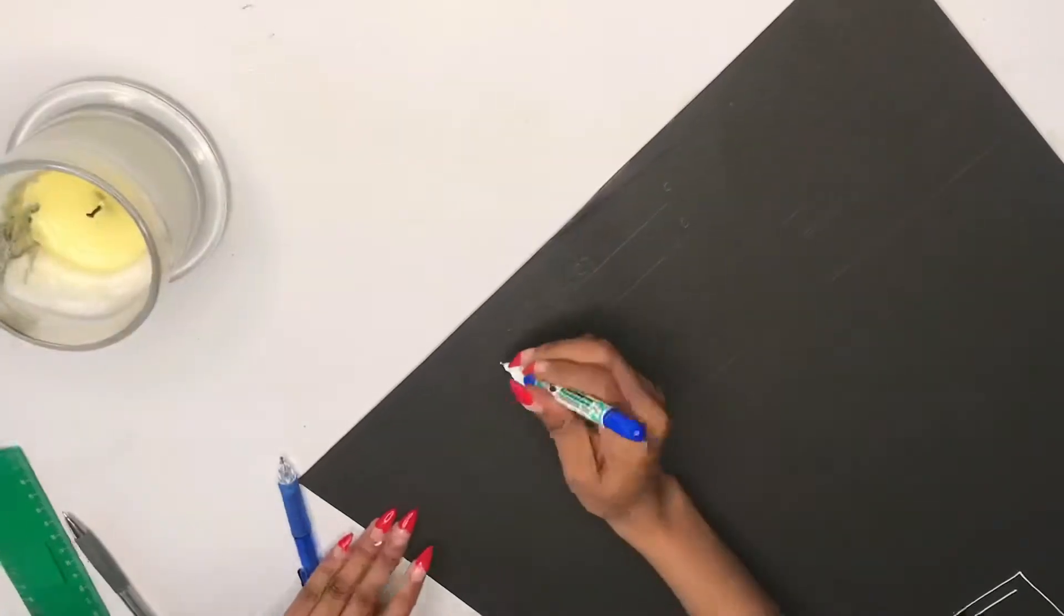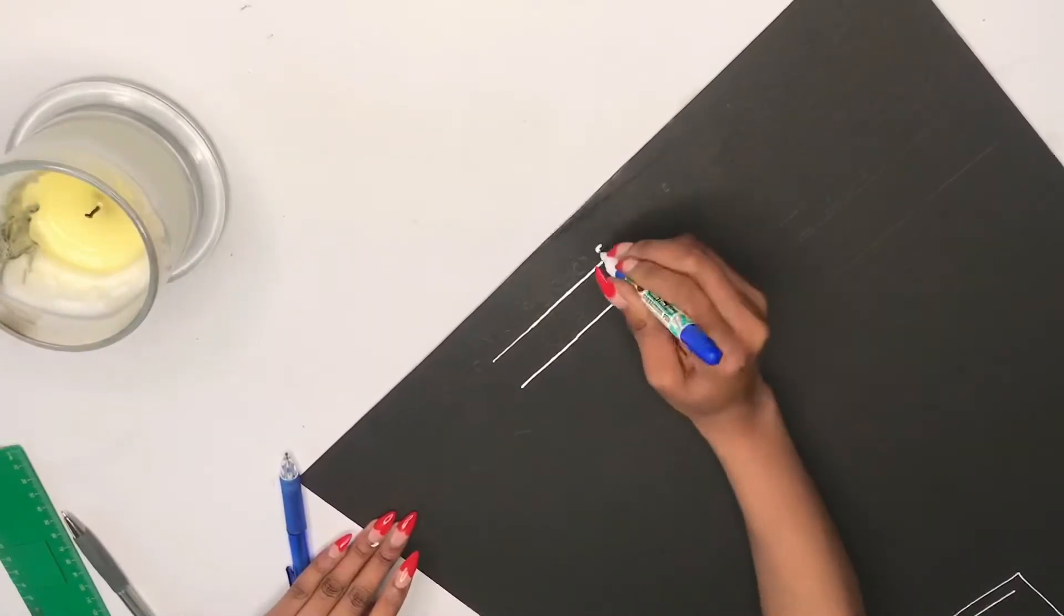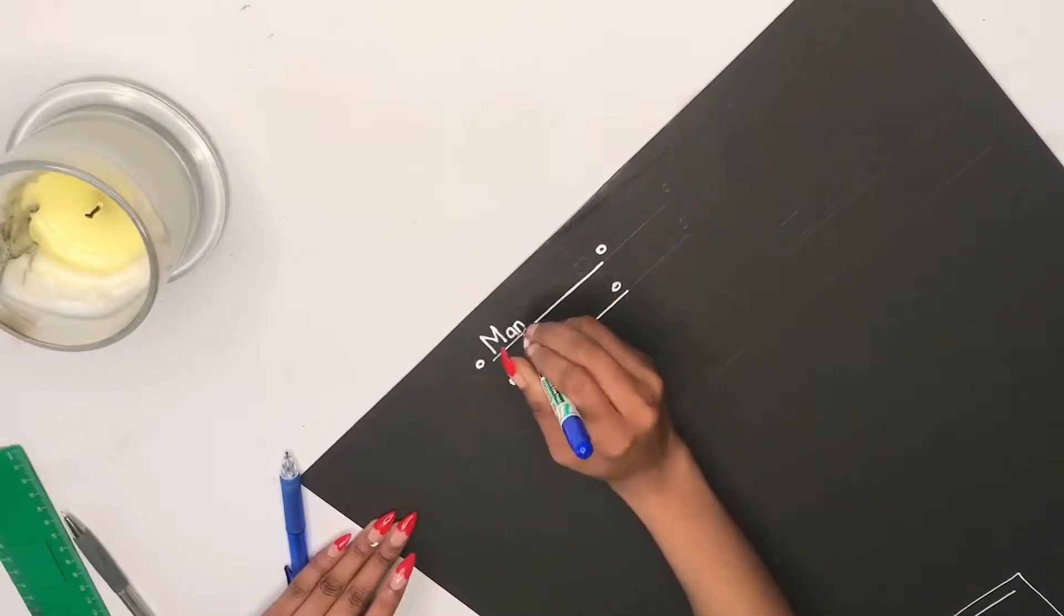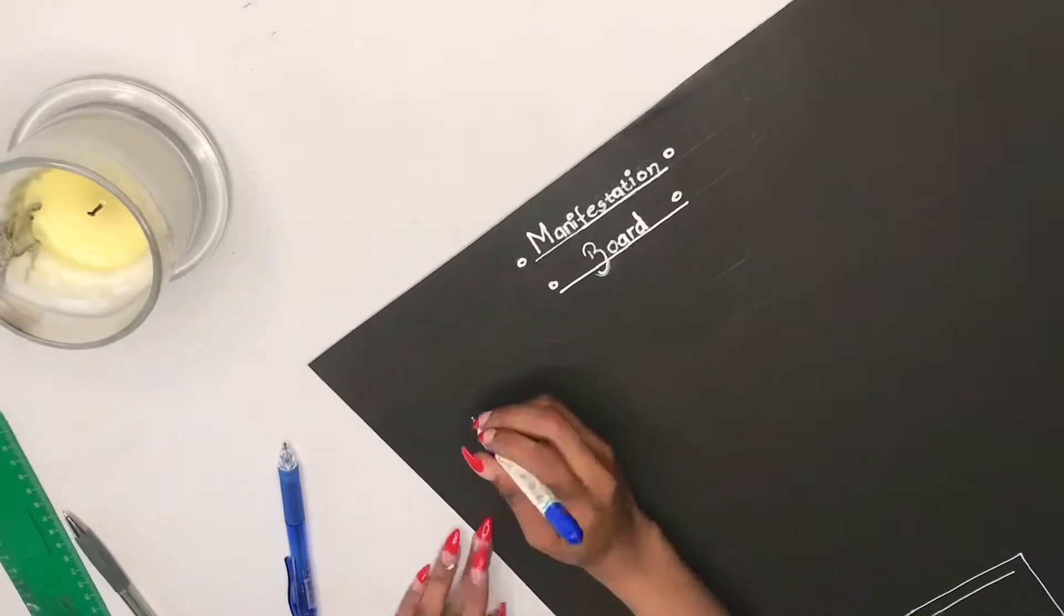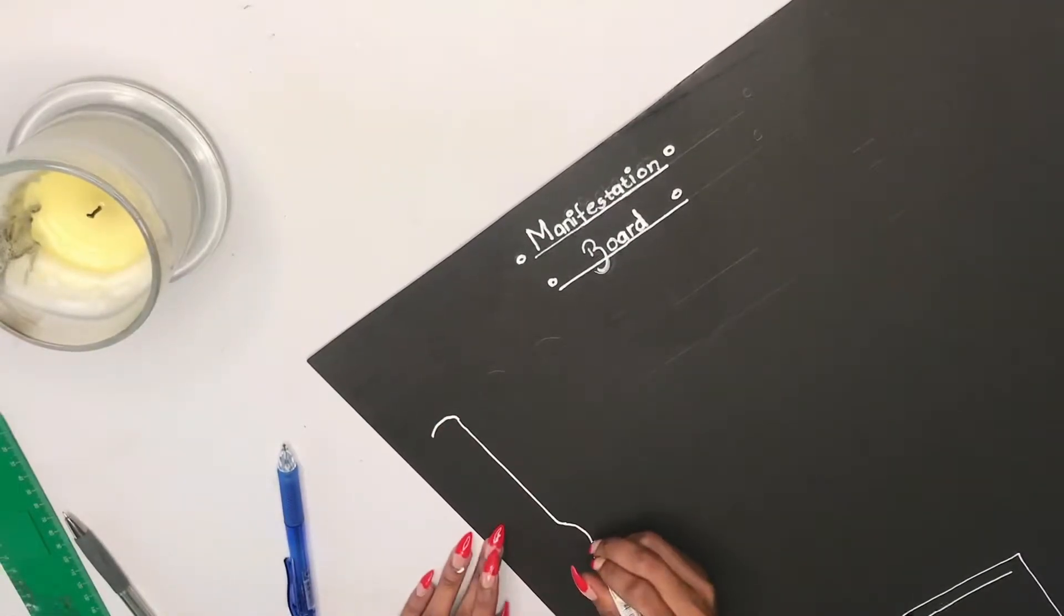I feel like my vision board is quite vague because it's like a lifestyle kind of change, whereas this is going to be more specific and intentional.